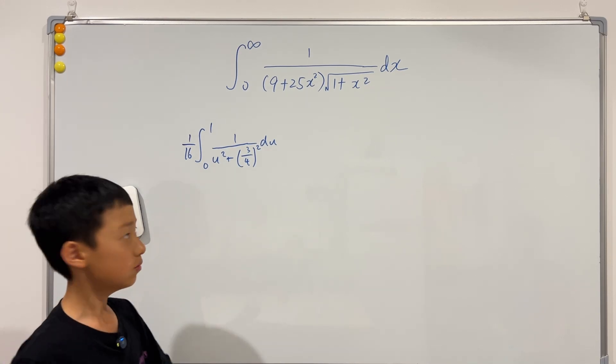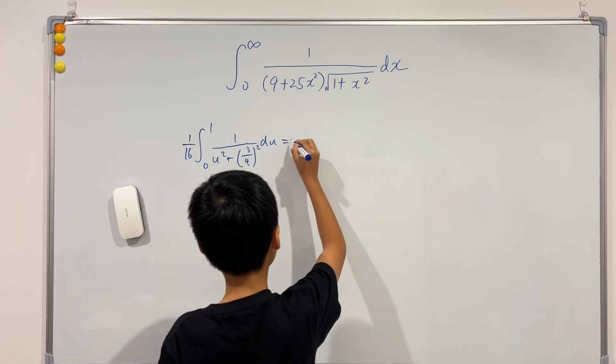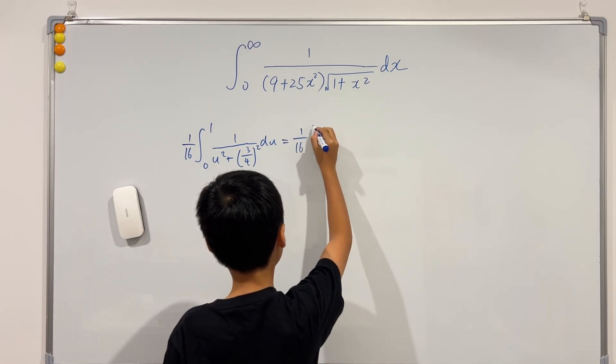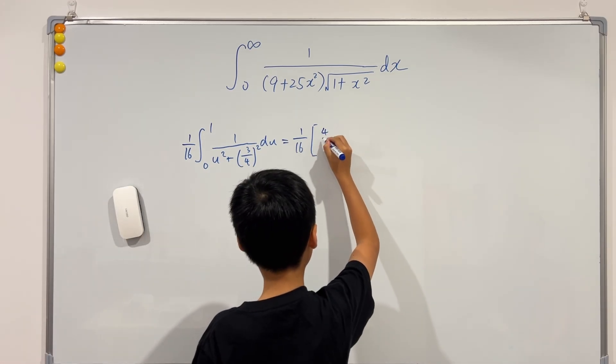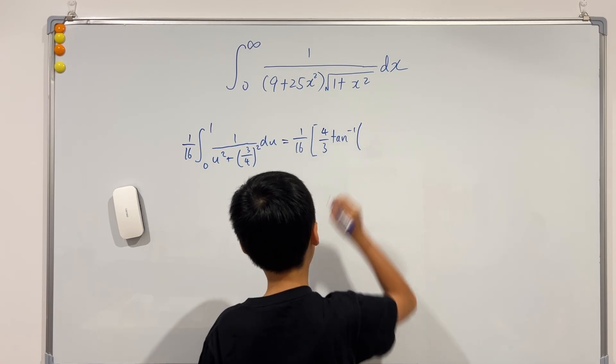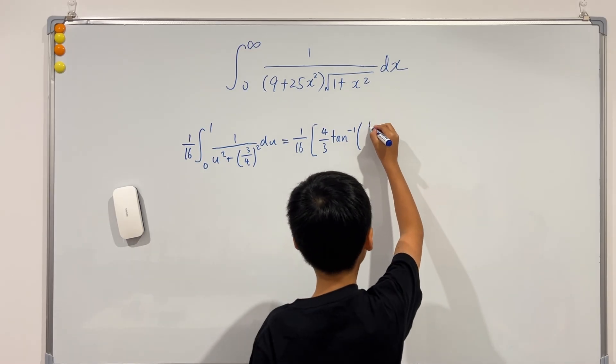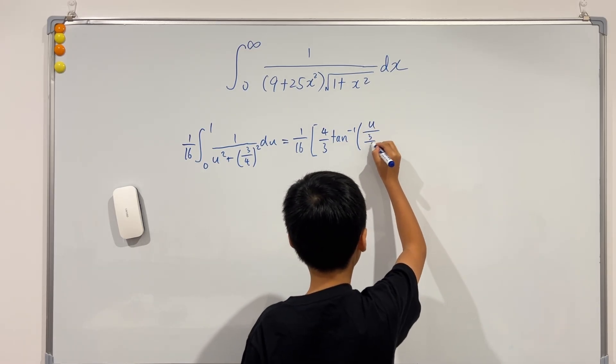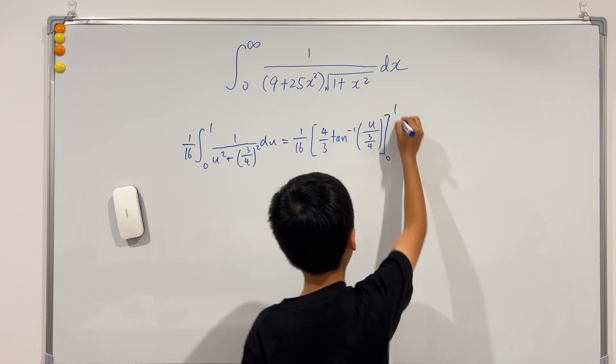Okay, so this is standard inverse tangent form. So this will just be 1 over 16, 1 over the A times the inverse tangent of the u over the A. And then we go from 0 to 1.